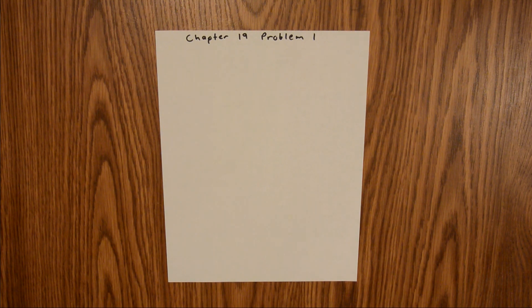Chapter 19 is all about the kinetic theory of gases, and in Problem 1, we are given a certain mass of gold and asked to find how many moles and how many atoms are in that sample.